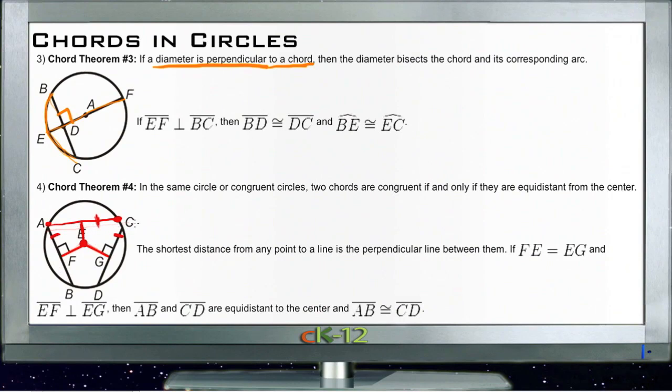So anytime I have any two circles that are the same or any single circle, if I have two lines that are the same distance from the center, those two lines are going to be identical.